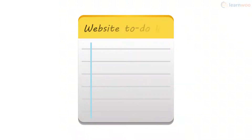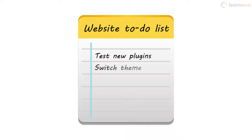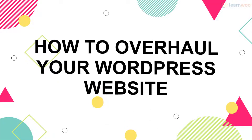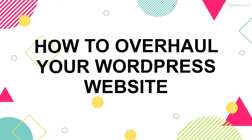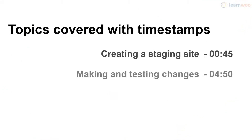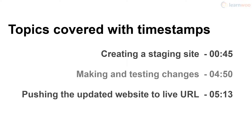There are plenty of reasons you may need to overhaul your website — you may need to test new plugins, switch themes, install major updates, or try out new types of content. Doing these things on your live site without testing could lead to errors like a white screen. In this video, you'll learn the right way to overhaul your WordPress website: creating a staging site, making the changes, and pushing the updated website to your live URL.